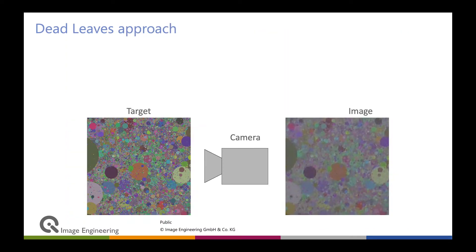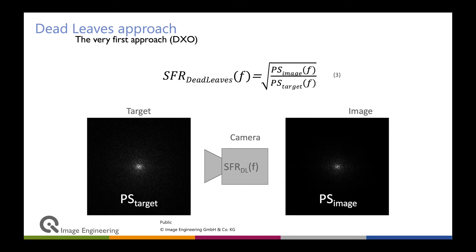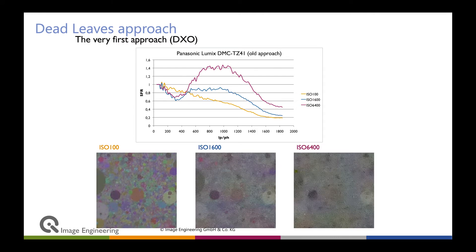The original idea was to reproduce a target with your camera to get the image. In signal theory terms: we have the target spectrum x(f), the transfer function h(f), and the image power spectrum y(f). We measure the power spectrum in the image, and because we can model the dead leaves power spectrum from known chart properties, we can calculate h(f) — the SFR. However, this original 2009 approach was highly influenced by noise, which could render results useless.